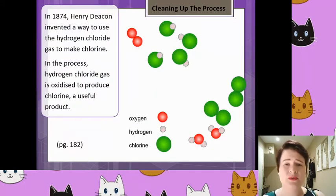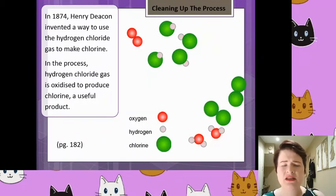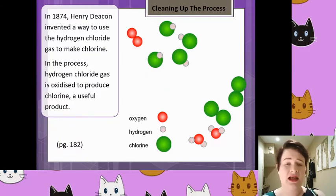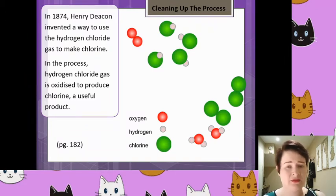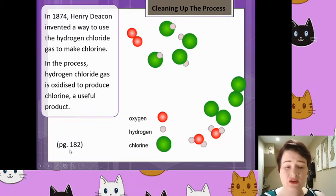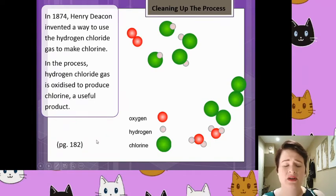One of the last improvements that was actually made to the LeBlanc process was by Henry Deacon, which we discussed last lesson. Henry Deacon will come up again because part of his reaction is reversible. Therefore, later on in this unit, we do need to talk about reversible reactions — that's a cheeky heads up for later, get your reversible reactions heads on. At the bottom of the screen on the left hand side you can see a textbook page reference. I will show you which textbook that links to.